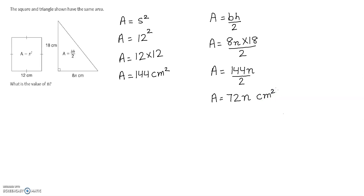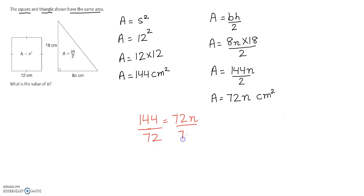Reading the question again, the square and triangle have the same area, so they are equal to each other. I will write 144 equals 72n. To solve for n, I will divide both sides by 72, canceling the 72s. Dividing 144 by 72 gives us n equals 2. Therefore, the value of n is equal to 2.